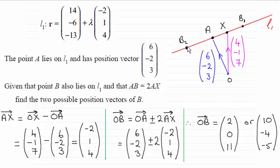And what I've done is I found out what the vector AX is. First of all, AX will be OX minus OA. A standard result. And then by subtracting the two position vectors gives me AX as (-2, 1, 4).